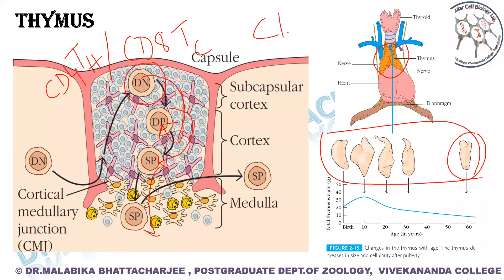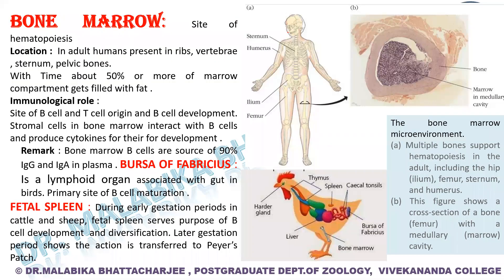Moving on to the second primary lymphoid organ, the bone marrow — the site of hematopoiesis and the site of origin of both B and T lymphocytes, even though T lymphocytes mature in the thymus. In adult humans, it is present in the ribs, vertebrae, sternum, and pelvic bones. Stromal cells in the bone marrow provide nourishment to developing B and T lymphocytes and produce cytokines for development.